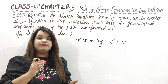Now let's move to the next part. The next part is parallel lines. We have the equation 2x plus 3y minus 8 is equal to 0. We need to make one more equation such that the geometrical representation of both forms parallel lines. For parallel lines, if you remember, a1 upon a2 is equal to b1 upon b2, but it is not equal to c1 upon c2. If this condition is verified, that means both lines are parallel.